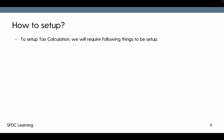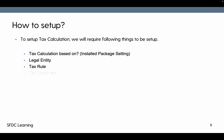Now, how to set up tax calculation requires the following things. First, the 'Tax Calculation Based On' setting, which is available in the install package settings for the billing package — we'll see what values it has and what happens if it is not set. Then legal entity is required. Tax rule and tax treatment are also required. Tax integration is required to define which type of integration it is. And tax rate is required, because without tax rate we won't know what percentage of tax will be applied.